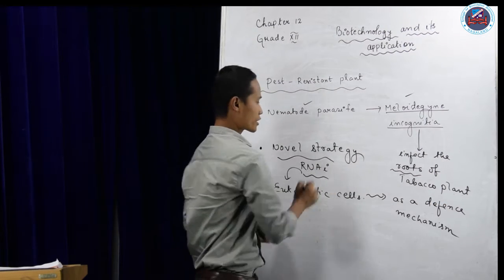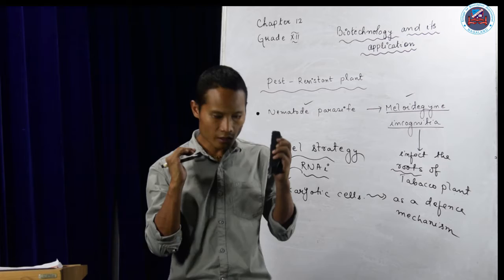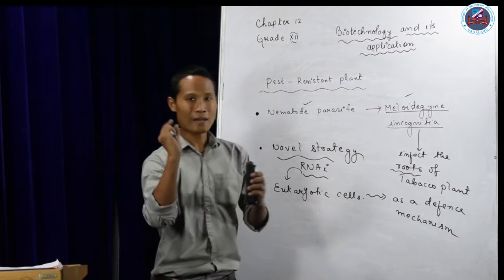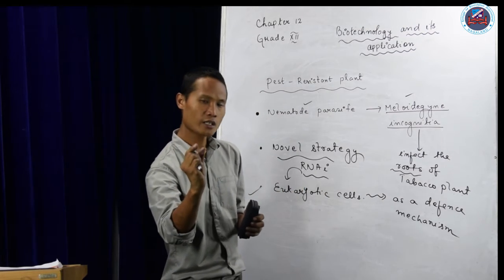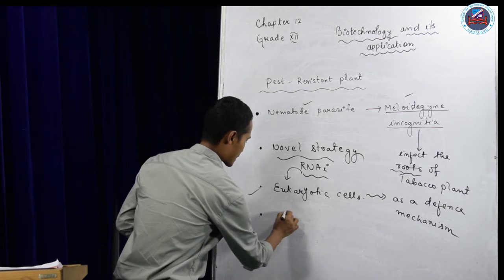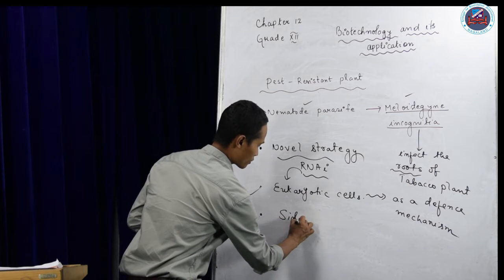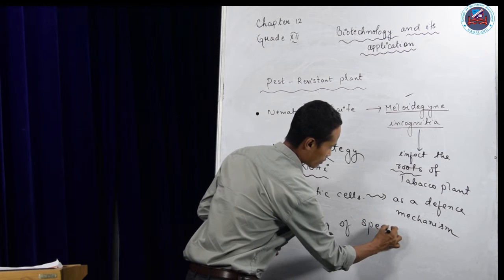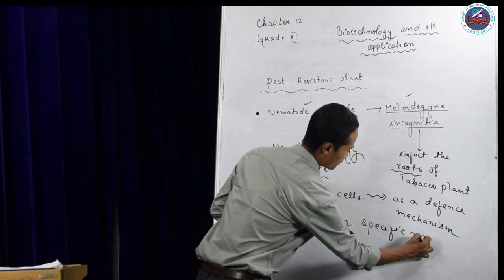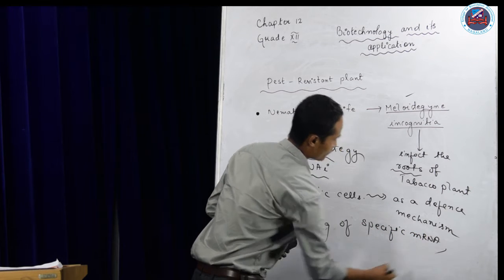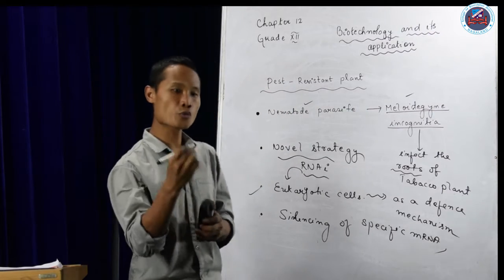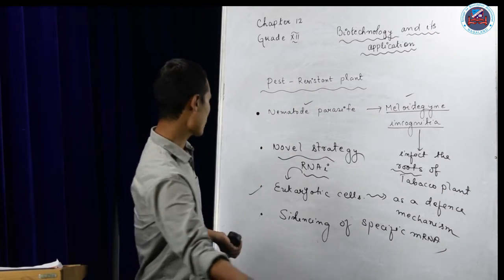Here in RNA interference, we are using a method, a strategy. That is silencing of specific mRNA. Now if we silence, if we don't allow the mRNA to produce protein, then what happens?